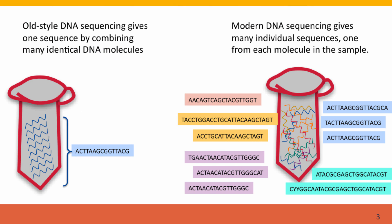Back in the good old days, before about the year 2000, DNA sequencing was done on pure samples of DNA consisting of many identical copies of a single DNA molecule, a single DNA fragment. The result of that analysis was one DNA sequence that represented the average sequence over the whole sample.